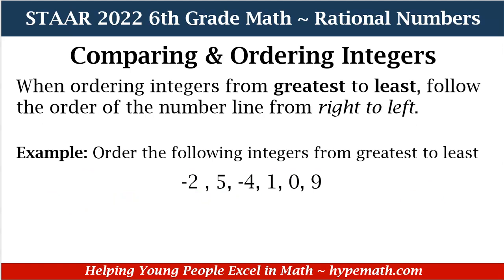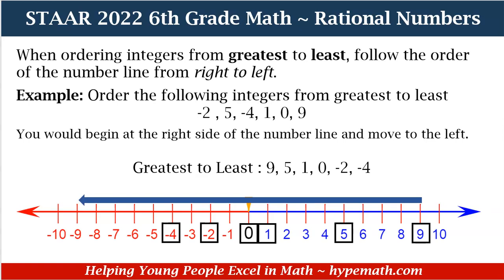Let's look at an example. We want to order the following integers from greatest to least: negative 2, 5, negative 4, 1, 0, and 9. So let's see how that would look on our number line. We start with our furthest number to the right, which is 9, and then it's 5, 1, 0, negative 2, negative 4.